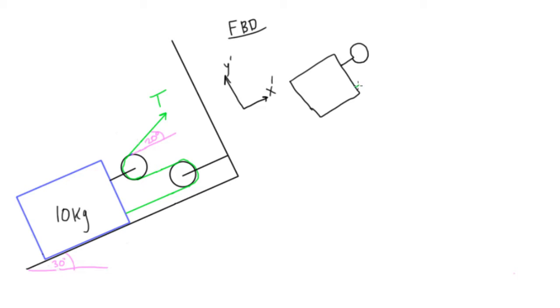Alright so we're going to have tension here pulling away from the box where it's connected to it also at this part of the pulley and here it's going to be going off at 20 degrees. So we can say this is tension, tension, and tension.